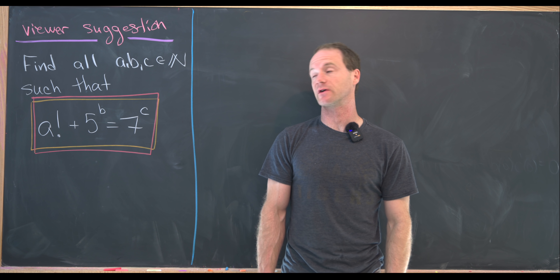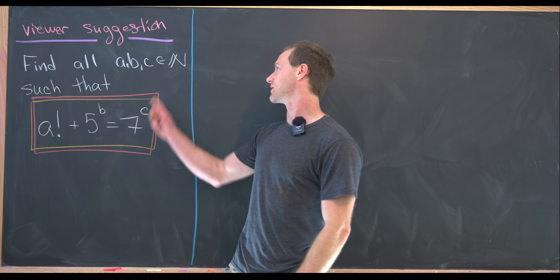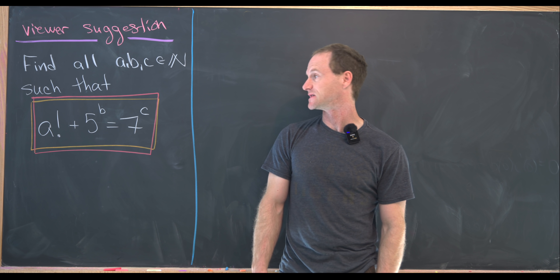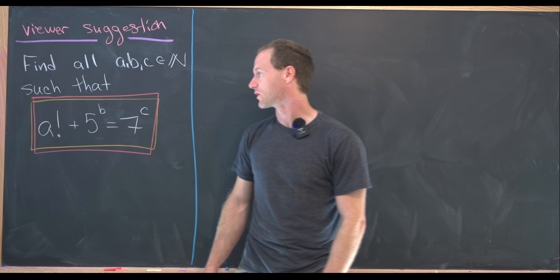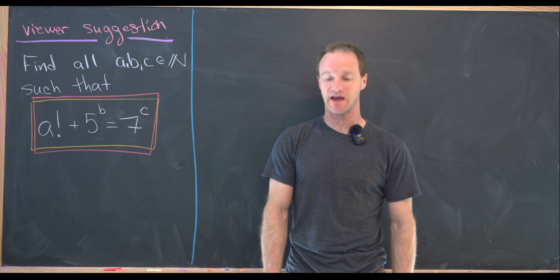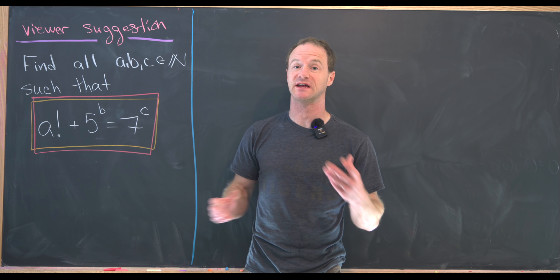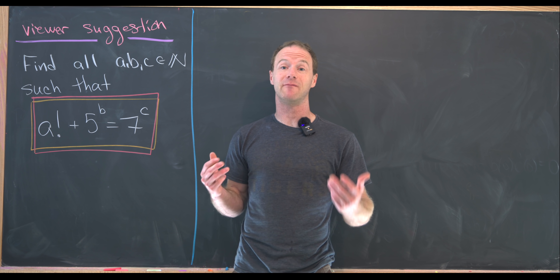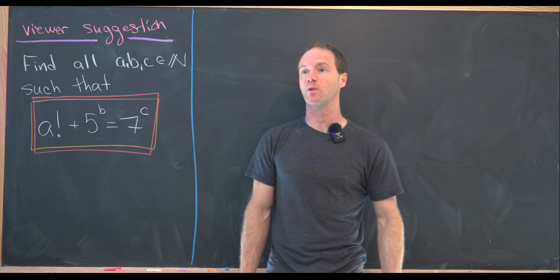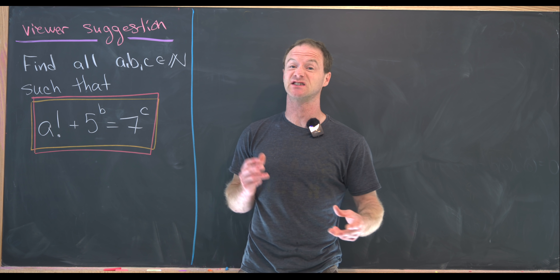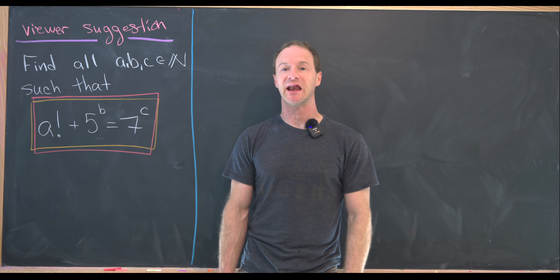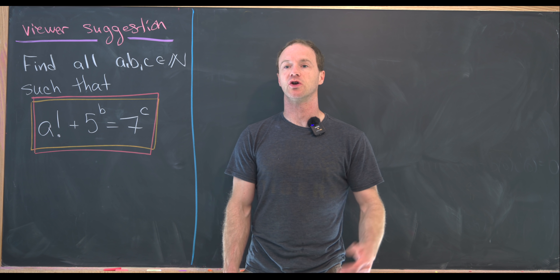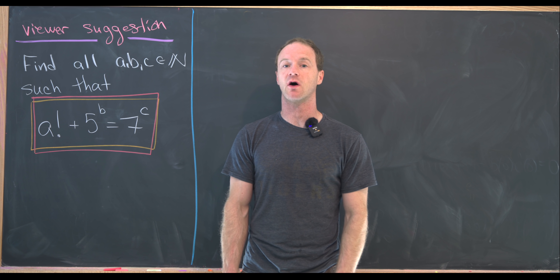I've got a nice viewer-suggested number theory problem today. Our goal is to find all natural numbers a, b, and c — by natural numbers I mean positive integers — such that a factorial plus 5 to the b equals 7 to the c. As it goes with most problems like this, there's either an obvious infinite family of solutions, or only a couple of very small solutions. As we'll see, there are a couple of small obvious solutions, and then there are no more. But the trick is proving that there really are no more.